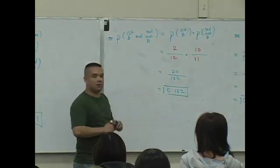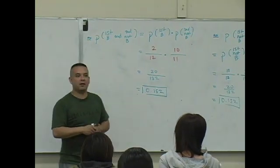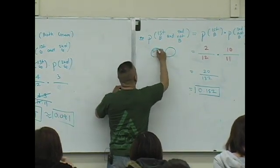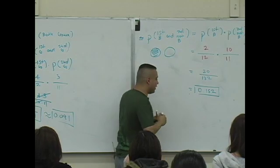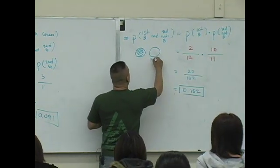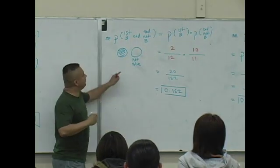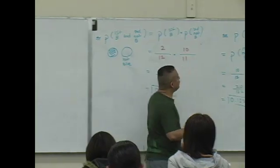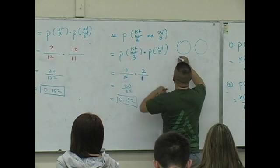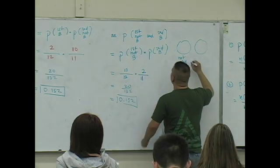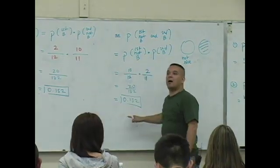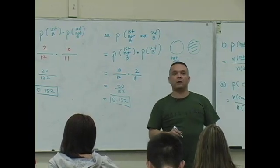I want to point this out because it's going to have meaning next time we come back. What do you guys notice? In the scenario where the first was blue and the second was not blue, compare that to the situation where the first is not blue and the second is blue. What did you get as a value? It's the same value — 0.152 both times.